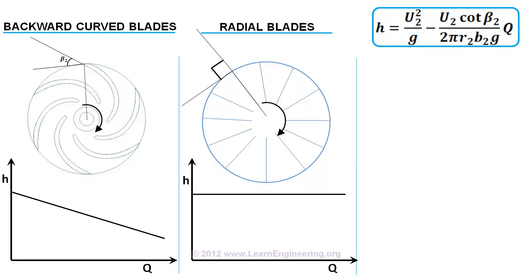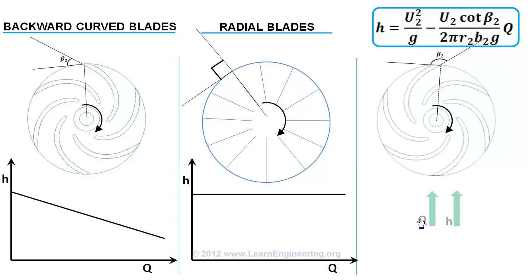If beta is more than 90 degrees, pressure increases with increase in flow rate. Such blades are called forward curved blades.